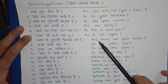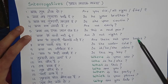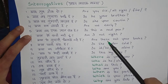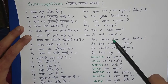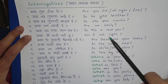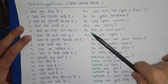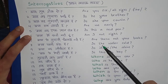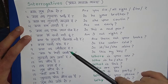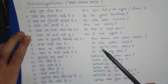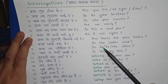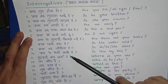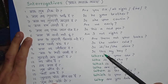Kya yeh tumhari kitaabein nahi hain? — Are these not your books? (Question bhi hai aur negative bhi — subject ke baad 'not' aa jaata hai.) Kya paani thanda hai? — Is the water cold? Kya woh zinda hai? — Is it/he/she alive? Kya yeh meri chaabi hai? — Is this my key?